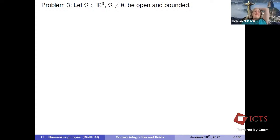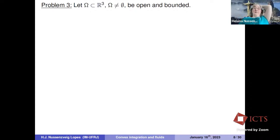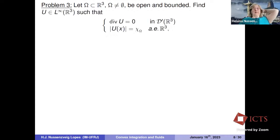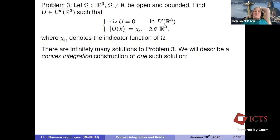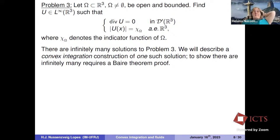Now problem three: in three dimensions. In one dimension we found no solution; in two dimensions, infinitely many; in three dimensions, also infinitely many, though much more difficult. Suppose I have some bounded open domain omega in three dimensions, and I want to find a vector field which is bounded, divergence-free in the sense of distributions, and whose norm equals the indicator function of omega. As I mentioned, there are infinitely many solutions. However, I'm going to describe a convex integration construction of one such solution. To show infinitely many requires a Baire category theorem proof; the objective here is to understand the convex integration method.